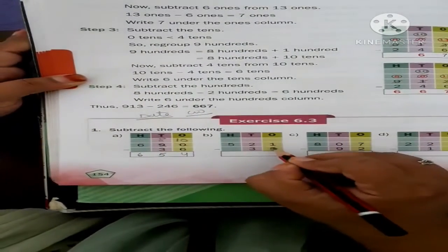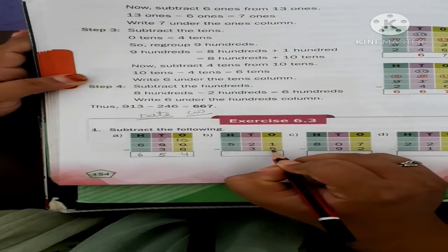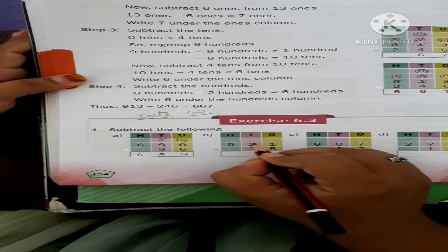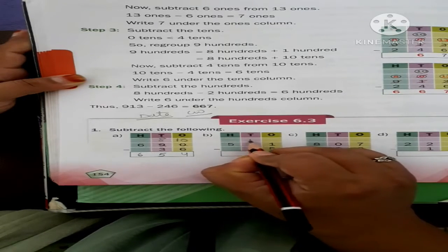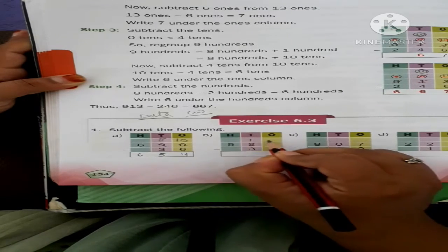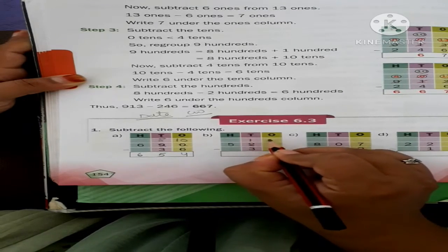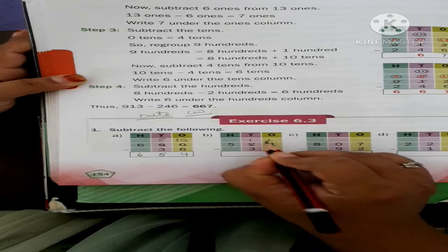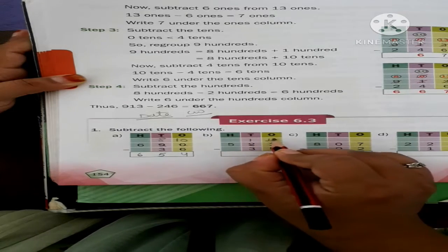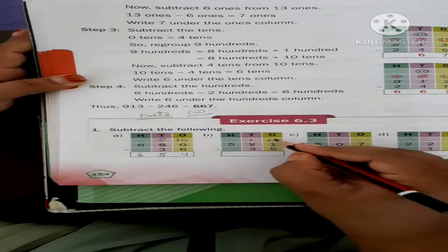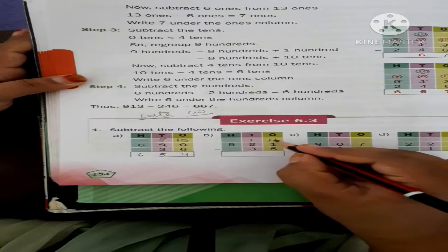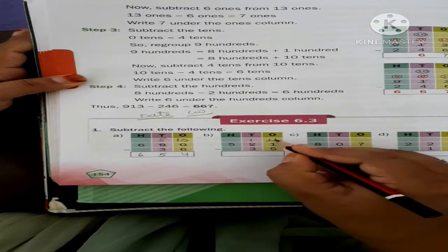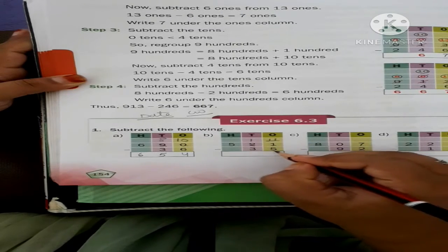Next: 1 minus 5 — we cannot subtract. So we borrow 1 from 2, leaving 1 there. The borrowed 1 comes here, and 1 plus the existing 1 makes 11. Now 11 minus 5 — count fingers: eleven fingers, remove five.